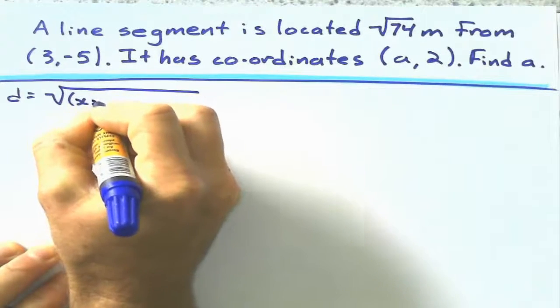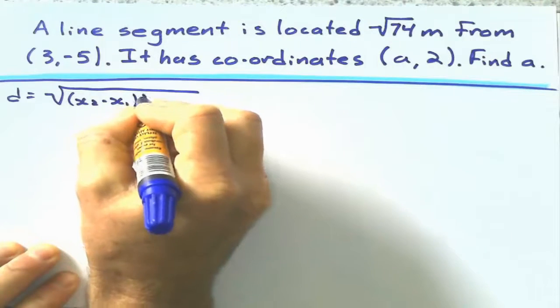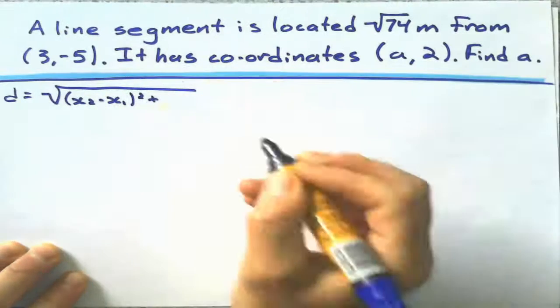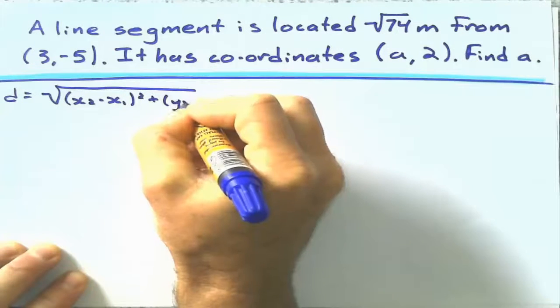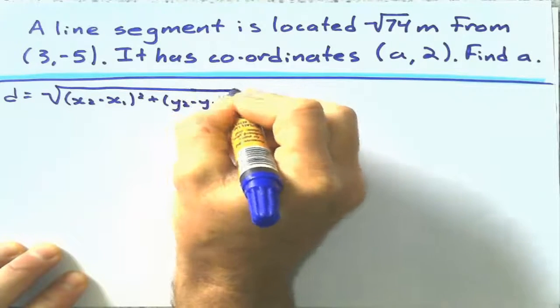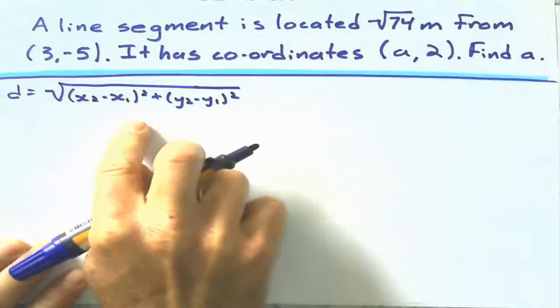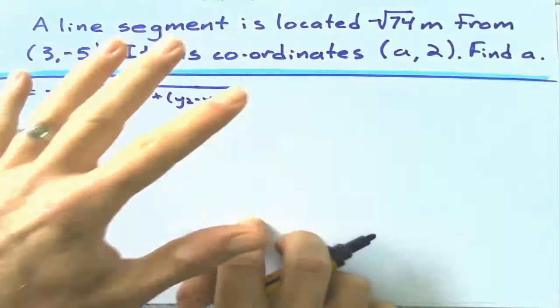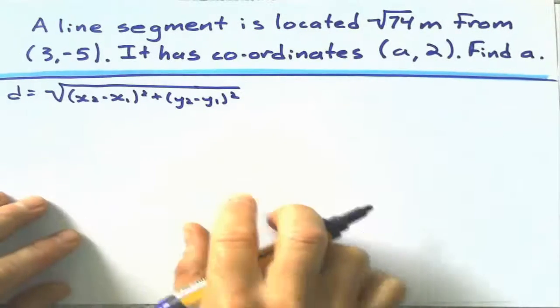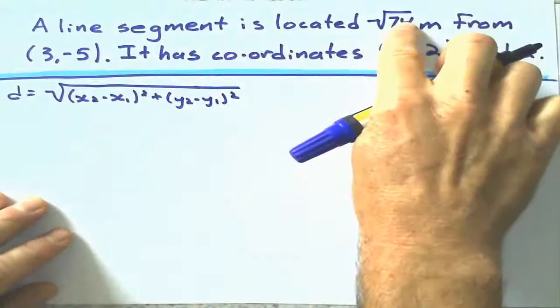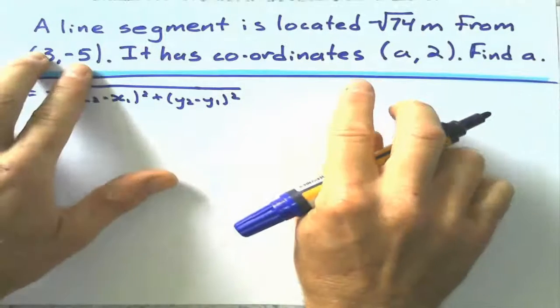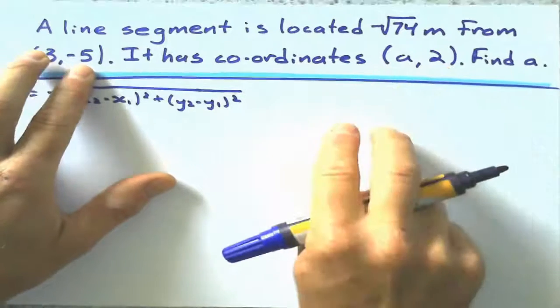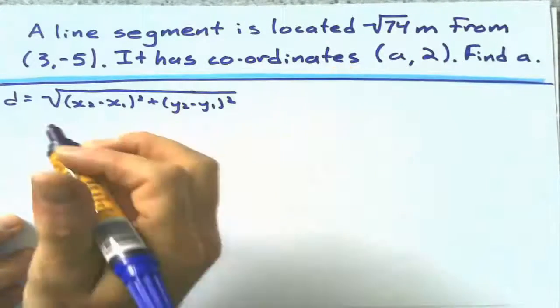What is that distance formula? The difference in the x-coordinates squared plus the difference in the y-coordinates squared. Of course, that's derived from Pythagoras. Well, here, we're just going to substitute everything that we know. My distance is square root of 74, and these represent x1, y1, and x2, y2.